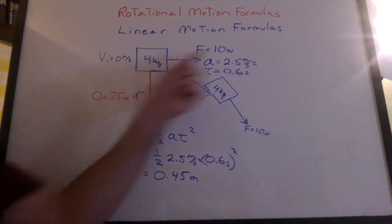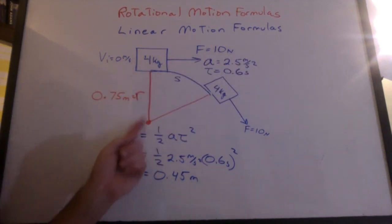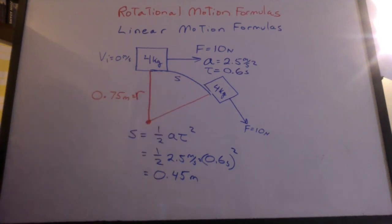It would be the same thing if it just went straight, but because it's mounted to a pivot, it's going to go curve. Can we figure out the angle that it rotated through?